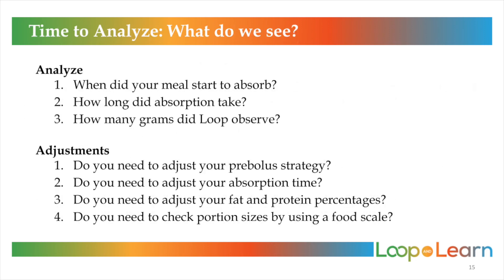Now it's time to analyze what we see. First, look at the carbohydrate screen and see when the meal started absorbing in comparison to when it was entered. Next, take a look at the absorption time and how many grams of carbs Loop observed. Then decide if you need to make any adjustments: Do you need to adjust your pre-bolus strategy? Did the meal outpace the insulin or was the timing correct? Do you need to adjust your absorption time? What did the carbohydrate screen show? Do you need to adjust your fat and protein percentages? If you went low, also look at your carb ratio during this time. Do you need to check portion sizes by using a food scale? Until you get a hang of this new way of bolusing, keep asking yourself these questions.